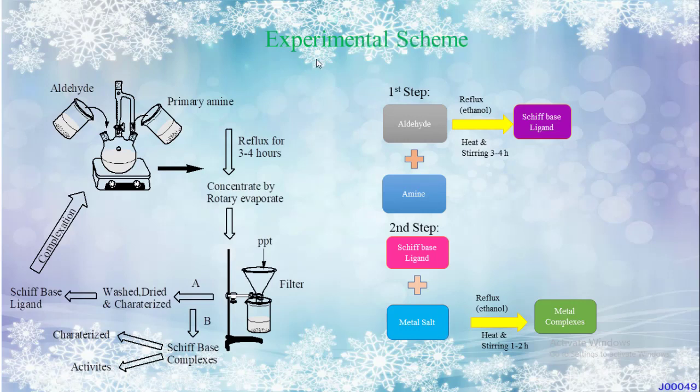Here is the experimental scheme. First step: aldehyde plus amine, reflux in ethanol with heat and stirring for three to four hours, produces Schiff base ligand. Second step: Schiff base ligand plus metal salt, reflux in ethanol with heat and stirring for one to two hours, produces metal complexes. The apparatus includes hot plate, round-bottom flask, reflux for three to four hours, concentrate by rotary evaporator, filter precipitate, dry, and characterize Schiff base ligand and complex.